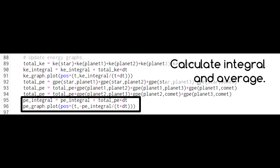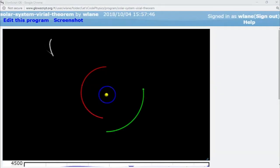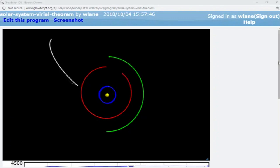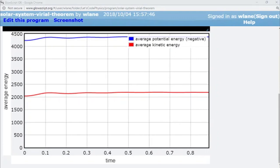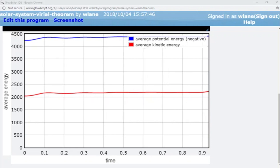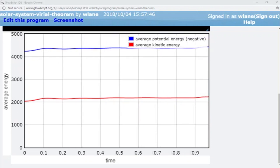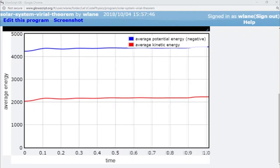We multiply by negative one to match the formulation of the Virial Theorem. No matter how complicated our planetary system is or how long the simulation runs, the two averages continue to track with each other with the average potential energy always twice as much as the average kinetic energy, just like the Virial Theorem predicts.